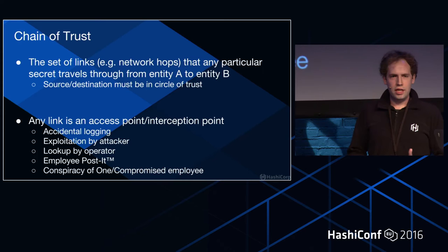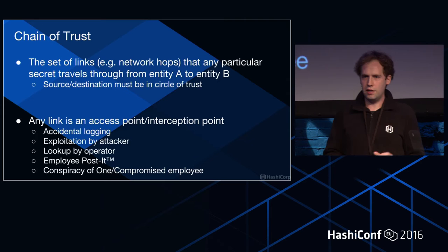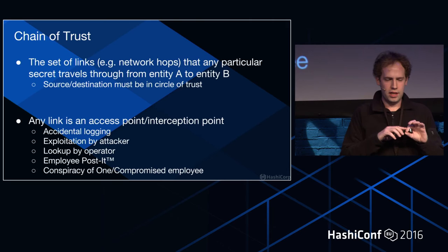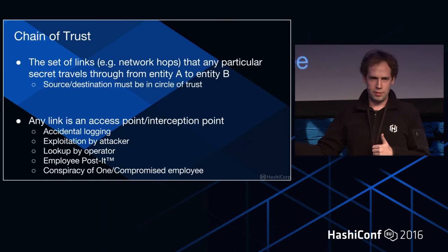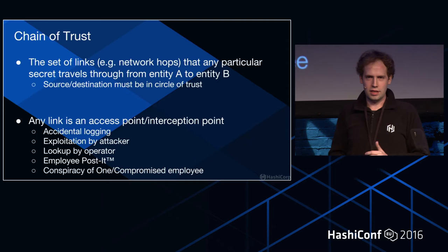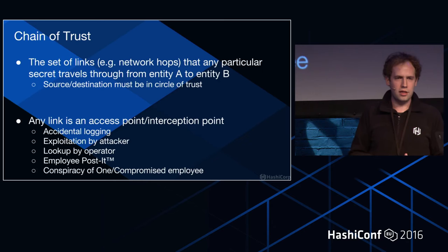A chain of trust is a set of links — often network hops in this world — that any particular secret travels through from entity A to entity B, where both are in your circle of trust. So if you want to get from your secret management tool to your container's RAM, that's defining a chain of trust. Any link is an access point or an interception point. If I trust Alice and Bob and I say something to Alice and she says it to Bob, it's okay. But if there's a microphone in the room and it picks up what I'm saying, that's a link that caused disclosure.